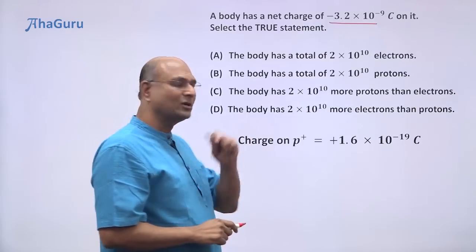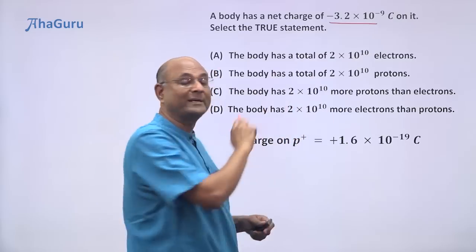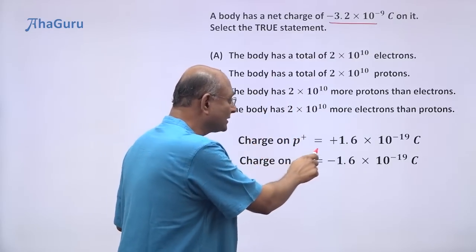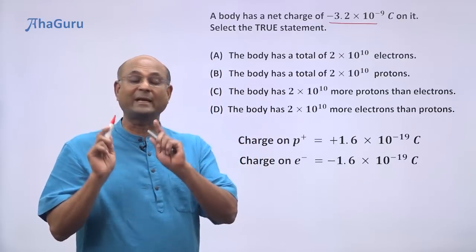First of all, the charge on a proton is +1.6 × 10^-19 coulombs. Charge on an electron is -1.6 × 10^-19 coulombs.